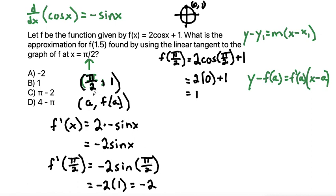Now we have our a, our f of a, and our f prime of a, and we can plug all those things into our equation. So that makes y minus f of a is 1, is equal to f prime of a is negative 2, times x minus a, which is pi over 2.